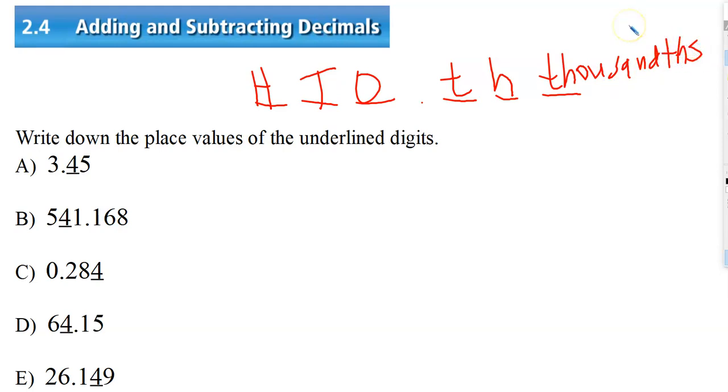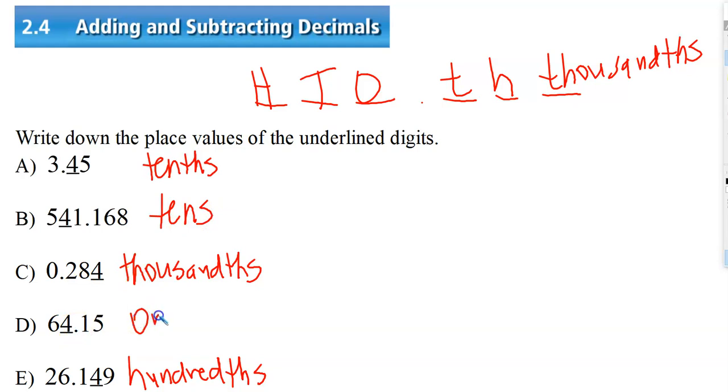So when we add and subtract decimals, we add the same place values together, just like when we do whole numbers. So this digit 4 is in the tenth place. I notice this is the tenths place, and then this 4 is in the hundredths place, and this 4 is in the thousandths place. So our place value gets smaller in the direction going to the right, numbers get smaller by a power of ten, but they get bigger by a power of ten going left. And this 4 is in the tens place, and this 4 is in the ones place. So that's just a basic review of place value.